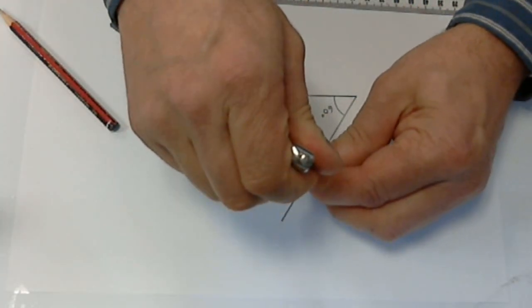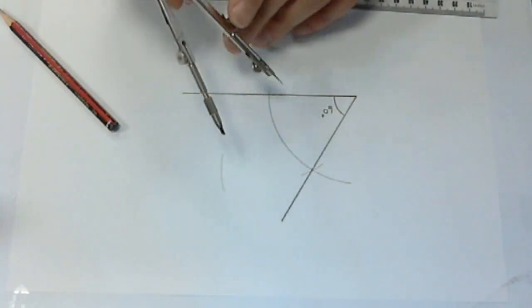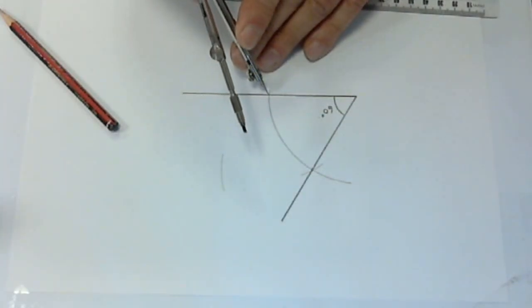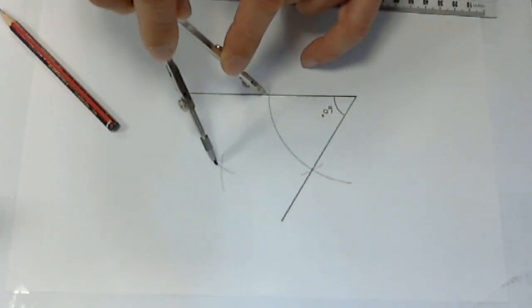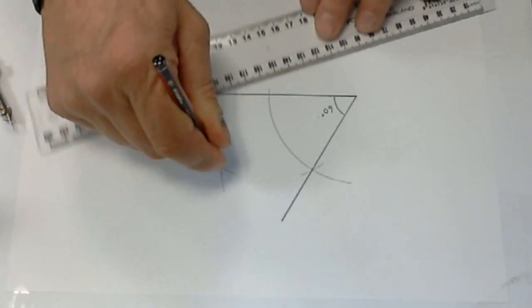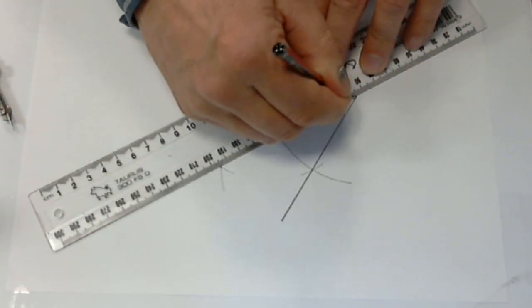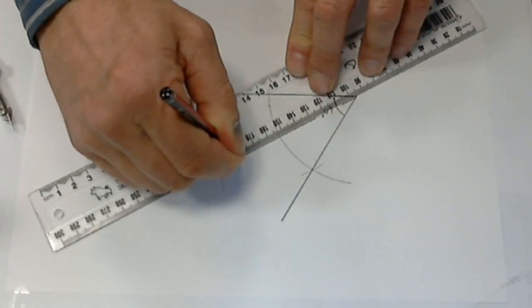Then moving down to this point, draw another arc. This point bisects the original 60-degree angle, so we can draw a line there and we've now got a bisector.